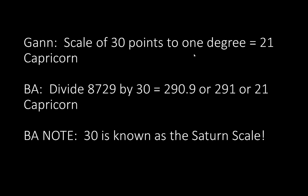Gann: scale of 30 points to one degree equals 21 Capricorn. BA: divide 8,729 by 30, which equals 290.9, or 291, or 21 Capricorn. Why 30? 30 is known as the Saturn scale. Saturn scale is 30, and he uses this a lot for his long term because Saturn is a planet that kind of moves slow. Saturn takes about 29.5 years to make a revolution. Gann rounds it out to 30 and uses 30.